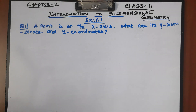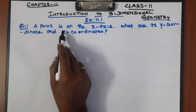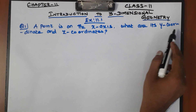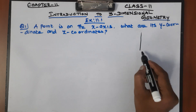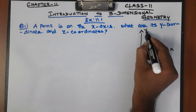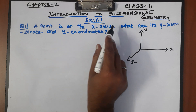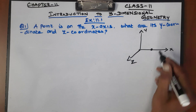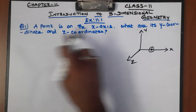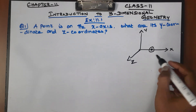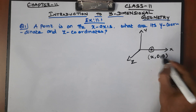First, a point is on the x-axis. What are the y-coordinates and z-coordinates? Where are the coordinates? x, y, z — let's take a diagram and talk about it. A point is on the x-axis, so its coordinates are x, 0, 0. Right?